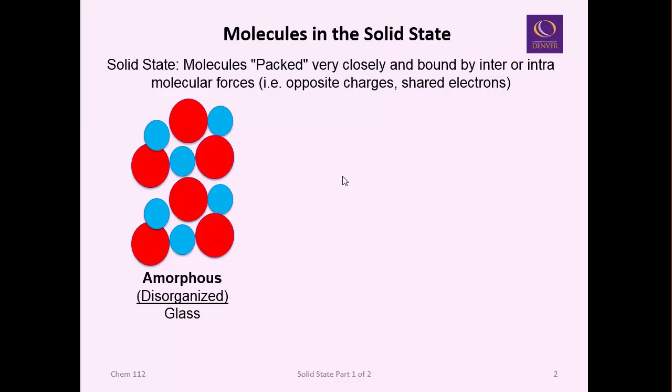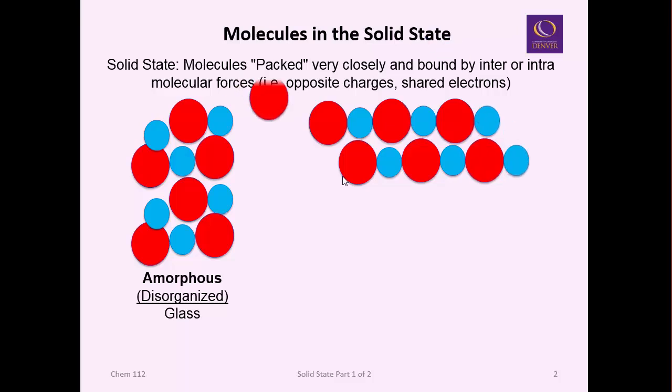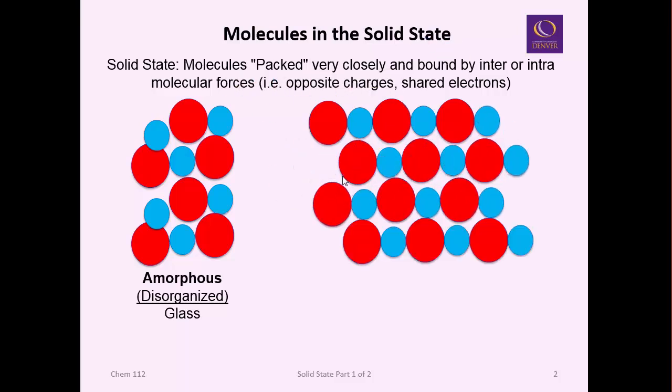But more probable, whenever particles start to bond together, they'll bond in an organized manner. These materials are then called crystalline. Crystal structure is often referred to as the lattice or lattice structure. Examples are diamonds or minerals, like deposits in a cave.